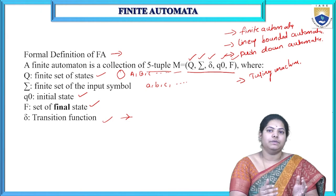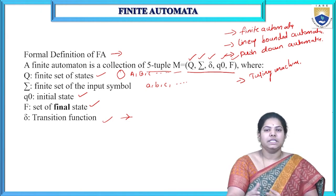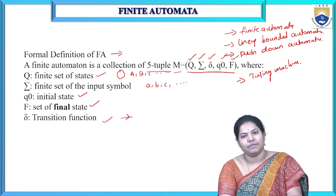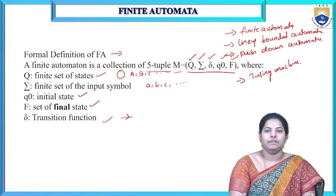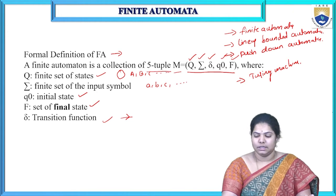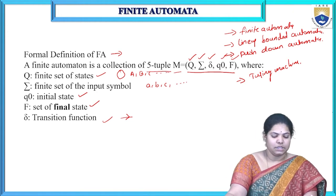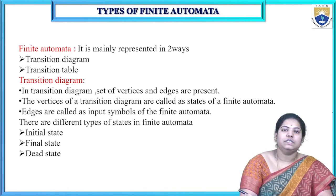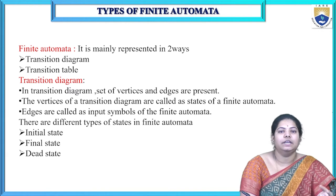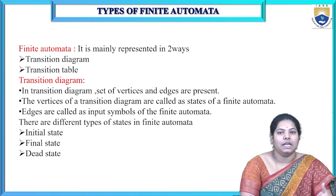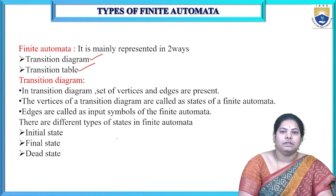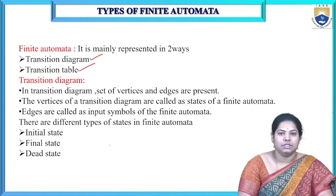The difference between finite automata and other automata is that each contains all five-tuple notations, but the difference lies in the transition functions — it differs from one finite automata to another. A finite automata is represented in two ways: one is a transition diagram, and another is a transition table.